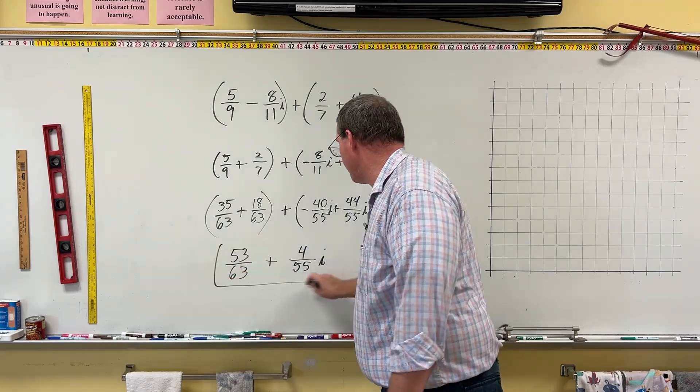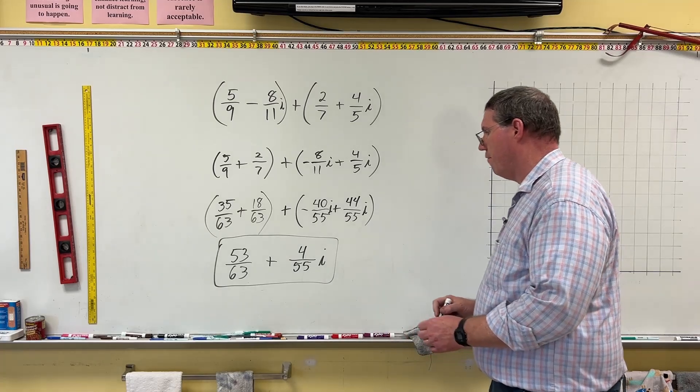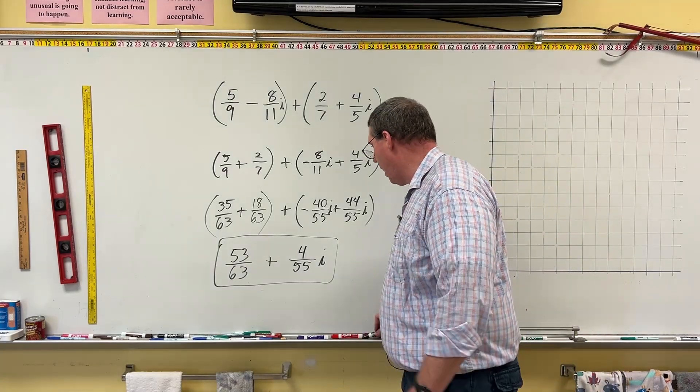And here is our complex number. 53 over 63 plus 4 over 55 i.